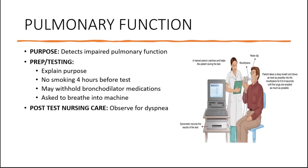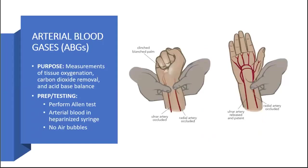Post-test, you need to observe for any distress. Another test is the arterial blood gas, which measures tissue oxygenation, carbon dioxide removal, and also acid-base balance. It's mostly used with patients who are mechanically ventilated or with cardiovascular disease.